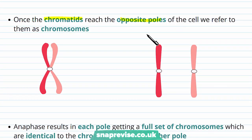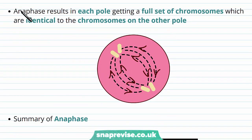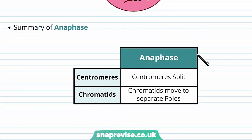The spindle fibers are critical in anaphase — they guide the chromatids to the poles using motor proteins. Once the chromatids have reached the opposite poles, we call them individual chromosomes again. Each pole of the cell receives one full set of chromosomes, identical to the set at the opposite pole, meaning when the cell divides, each new cell will have a complete set of DNA. In summary: the centromere splits to allow chromatids to separate into chromosomes, and the chromatids move to separate poles.